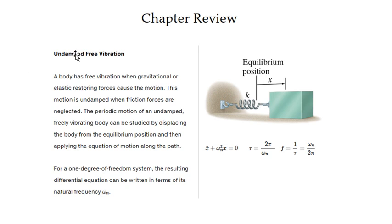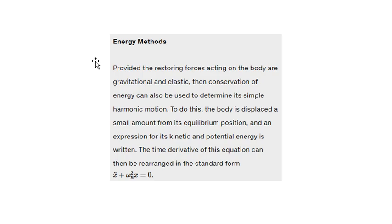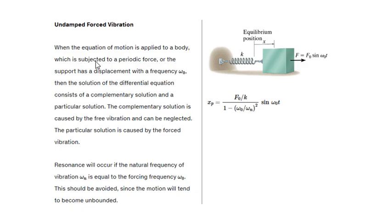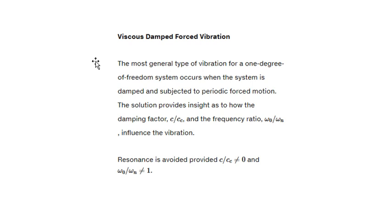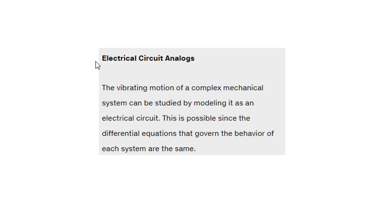For the chapter review: definitely know the undamped free vibration definition. Energy conservation between kinetic and potential is just a review from previous chapters. The more important ones are the forced vibration definition, viscous damped free vibration definition, and viscous damped forced vibration definition. Electrical circuit analog is not needed. That's it for this chapter — the last three chapters are a bonus, not really necessary, and you can complete this one in one or two days.